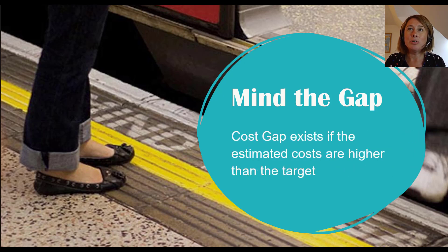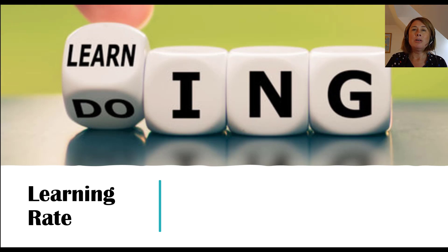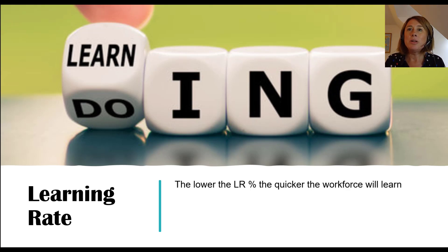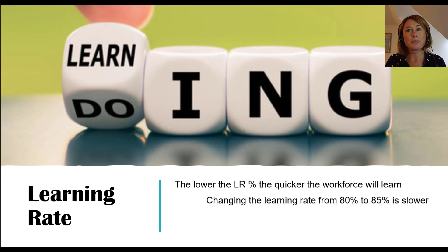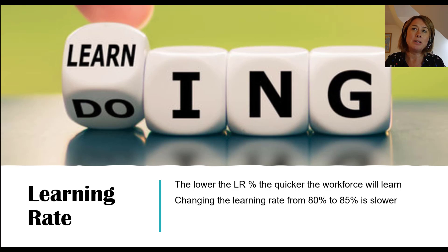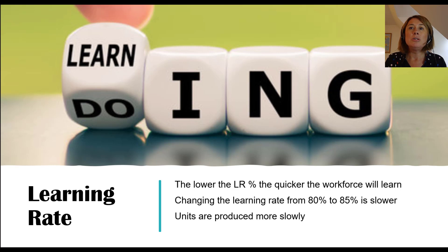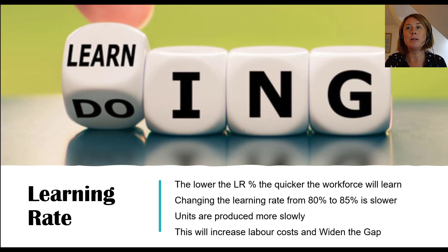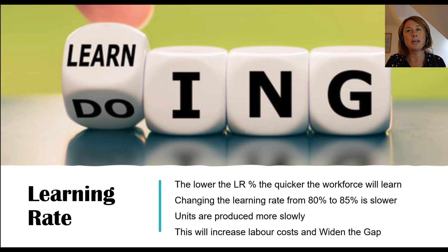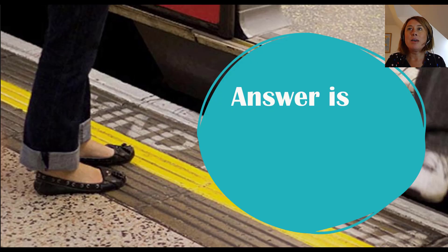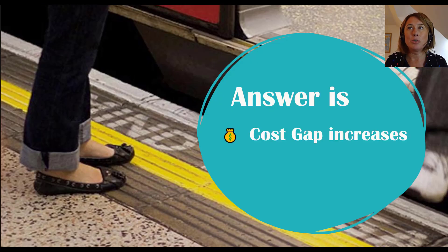It's the cost gap that exists if the estimated costs are higher than the target. Moving on to learning curves: the lower the learning rate percentage, the quicker the workforce will learn. Changing the learning rate from 80% to 85% is therefore slower. Slower means more cost, so this will increase labor costs and therefore widen that gap.